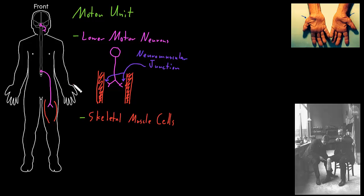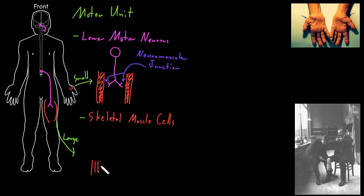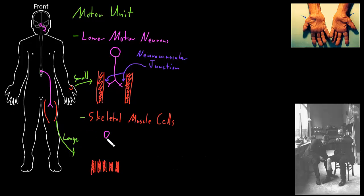Small muscles that need rapid, precise control — like those that move the eyes or the fingers — tend to have small motor units, where a lower motor neuron synapses on just a small number of skeletal muscle cells. Large muscles that do not need rapid, precise control, like those in the trunk and limbs such as the big muscles in the thigh, usually have large motor units, with each lower motor neuron synapsing on a large number of skeletal muscle cells — potentially many hundreds of individual skeletal muscle cells in a single motor unit of some of these big muscles.